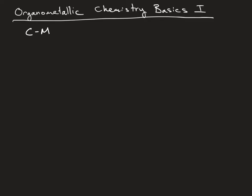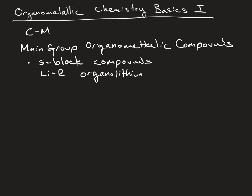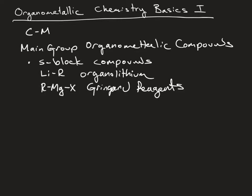We can break these down into general groups where we have our main group organometallic compounds. For example, S-block compounds that you've seen in organic chemistry — organolithium reagents and Grignard reagents you've encountered in sophomore organic chemistry. One can also find examples of organometallic compounds in the P-block.